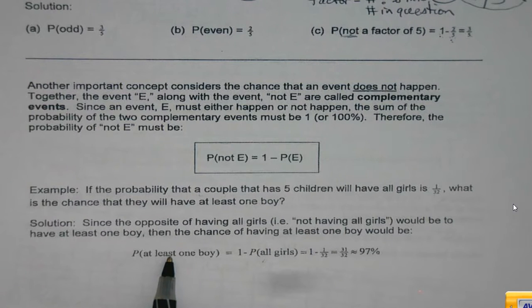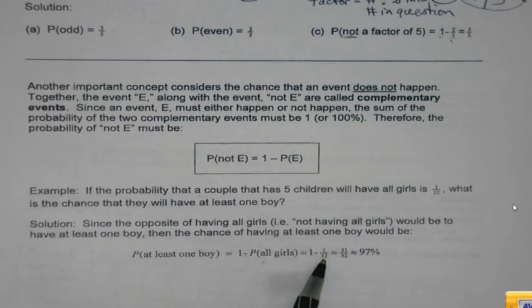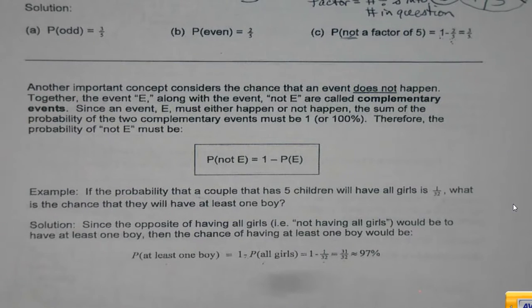So instead of figuring out all the ones that aren't all five, I'm just going to find out the probability that at least one's going to be a boy because then they're not all girls. Well, the probability of getting all girls, one out of 32. One minus that gets me the answer. I could do it the other way, but that'd be a lot of work.